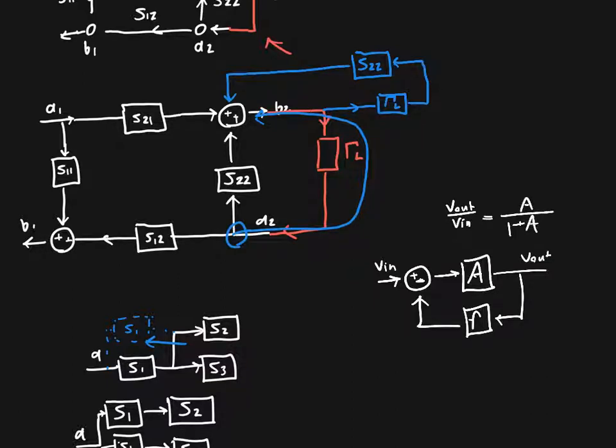And this is negative feedback here. Well, this is exactly the same thing, except you just have to tilt your head a little bit. So this whole thing is the feedback network. So instead of F, we have gamma L times S22.